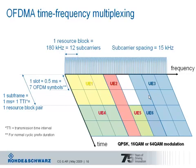Each UE can transmit with a different modulation scheme. Depending on the radio link quality for each UE, either a more robust scheme like QPSK or a more spectrally efficient scheme like 64QAM can be assigned.